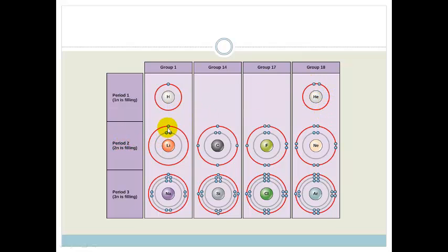Period 2 you'll see they've got 1, 2. Period 3 you've got 1, 2, 3. So groups tell us how many valence electrons and periods tell us how many energy levels we have.